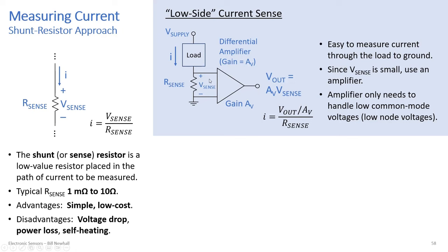Common-mode voltages are voltages that are common to both inputs of a differential amplifier. In this low-side circuit, one input is connected to ground — zero volts — and since V_sense is really small, the other input is also close to ground. Op-amps have a limitation on the highest positive and lowest negative voltage they can handle as input, so this is an easy case to handle since the common-mode voltages are low.